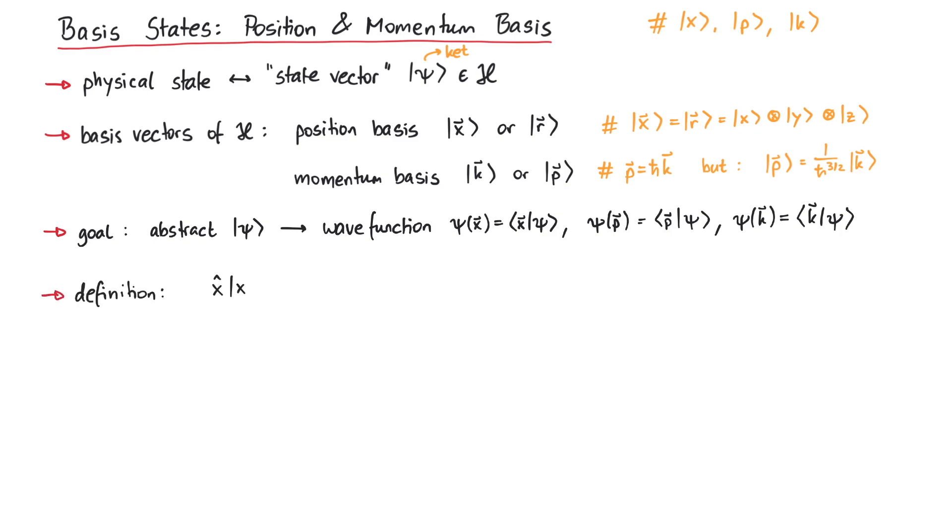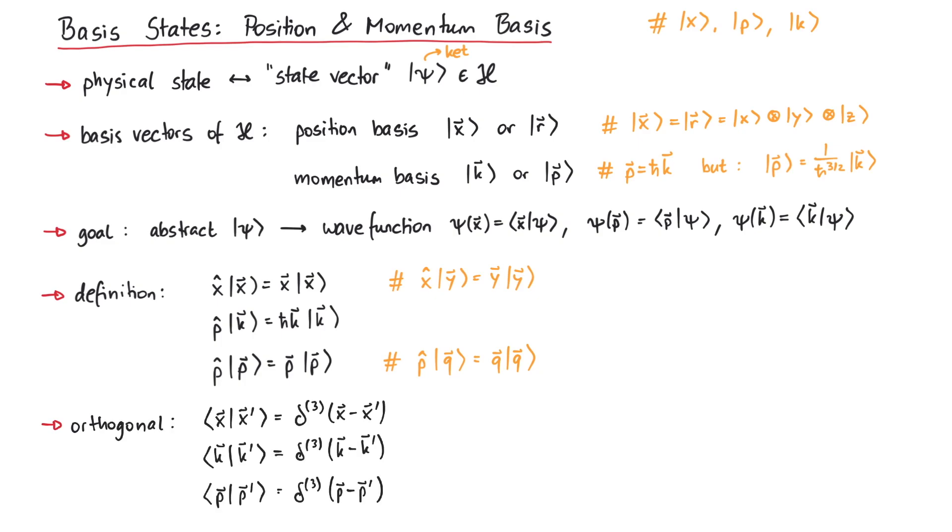Let's now discuss some properties of these basis vectors. First of all, they are defined as the eigenvectors of the position and momentum operators. Which letter we write inside the ket does not matter too much. It simply helps us distinguish two different basis vectors and only affects the eigenvalues. These basis vectors are part of an orthogonal basis, which can be written by using the Dirac delta function. Note that this is actually an abbreviation for three separate delta functions.